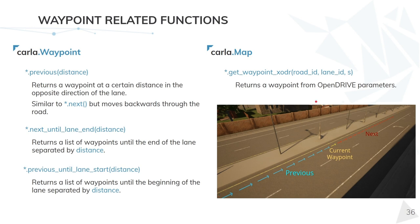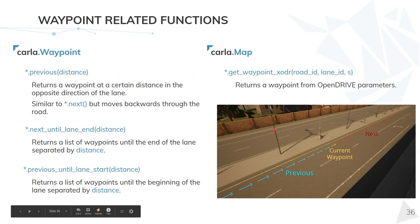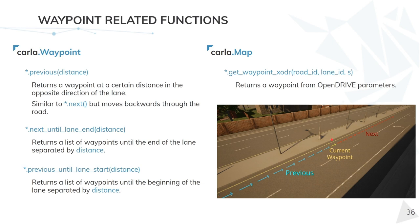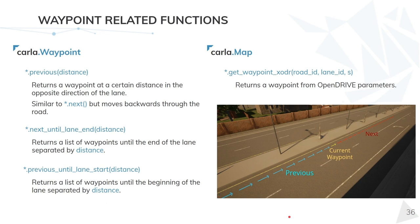Previously you could only use next to move forward through the road. Now we have added the possibility to move backwards through the previous function. Similar to next, you pass in a certain distance and you will get a new waypoint at that distance behind. We have also added helper functions: next_until_lane_end and previous_until_lane_start. These give you a set of all waypoints in a single call until the end or start of a particular lane. We have also added the possibility to query waypoints using OpenDrive information such as road ID and lane ID.